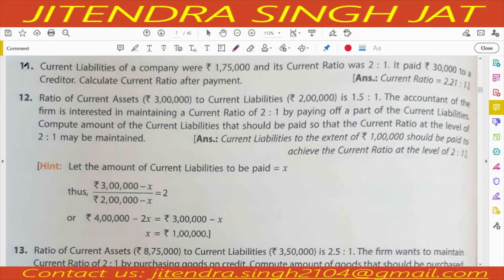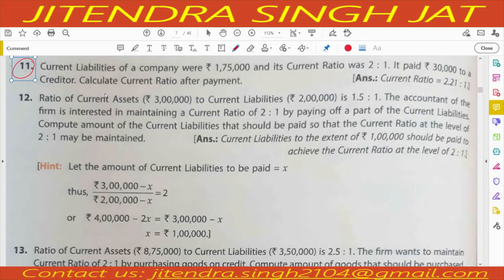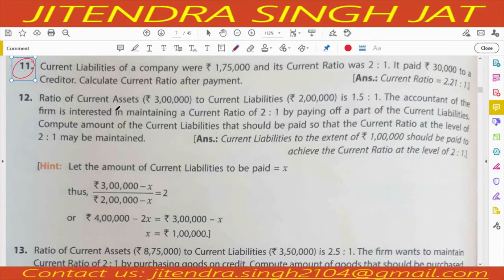Let's begin question number 11. Current liabilities of a company were 1,75,000 and its current ratio was 2 is to 1. It paid 30,000 to a creditor. Calculate the current ratio after the payment.